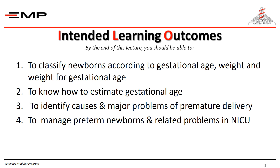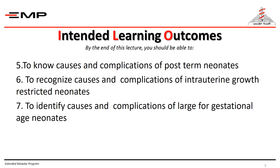These are the intended learning outcomes. By the end of this lecture, you should be able to classify newborns according to gestational age, weight, and weight for gestational age; to know how to estimate gestational age; to identify causes and major problems of pre-term delivery; to manage pre-term newborns and related problems; to know causes and complications of post-term neonates; to recognize causes and complications of intra-uterine growth restriction; and to identify causes and complications of large for gestational age neonates.